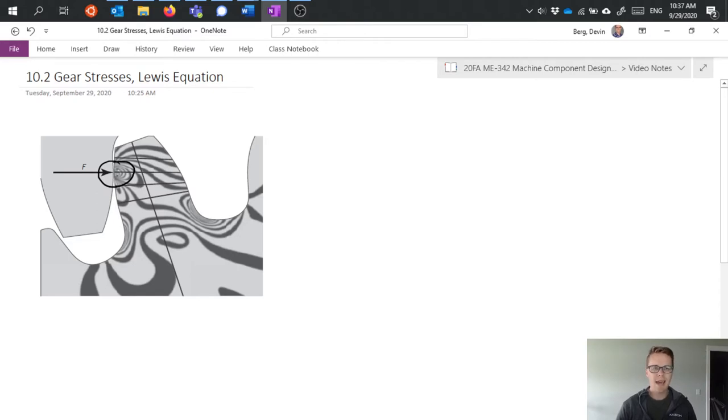Those are contact stresses, important to consider but not really what we're talking about here today. The other location of high stresses is down here in those fillet regions. If we have a force applied up here, we have the highest moment, as if this was like a cantilevered beam. We have the highest moment down here at the base and that's where we see these stress concentrations. These stresses are really the ones that we're going to look at, and there's a couple of methods you can use for analyzing gear stress. The first one we're going to talk about is called the Lewis equation.